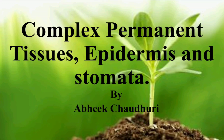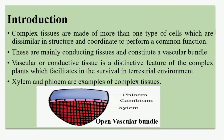Let's start with our video on tissues — complex permanent tissues, epidermis, and stomata. Complex tissues are made up of dissimilar cell structures that combine together to perform a common function: the conduction of food, water, and minerals. Such complex permanent tissues are also known as conducting tissues, and they arrange to form vascular bundles.